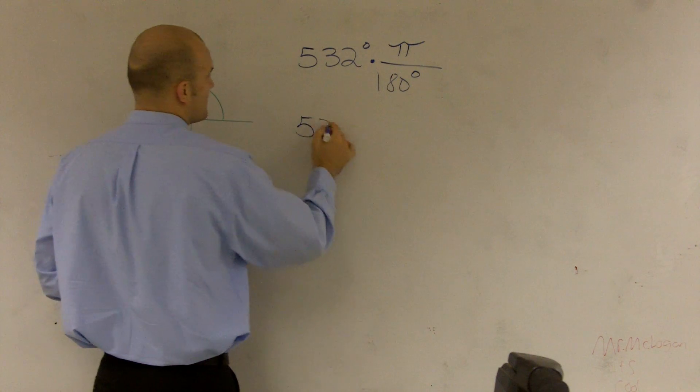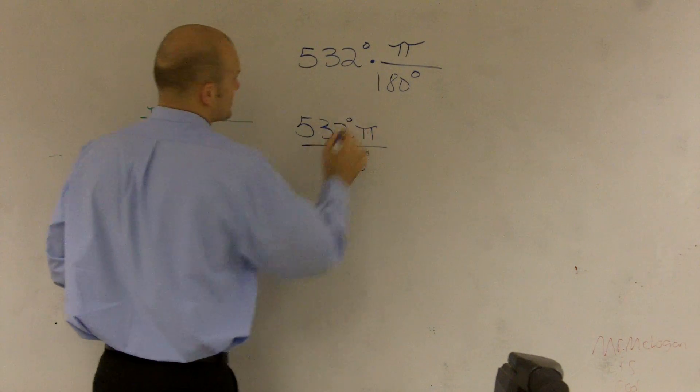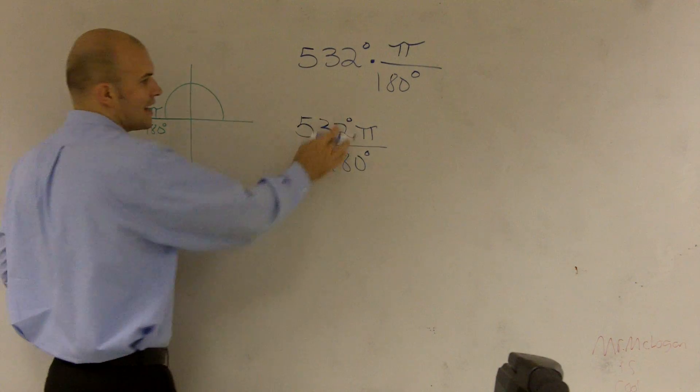Therefore, then when I do this, I have 532 pi over 180 degrees. And what happens is your degrees now are going to cancel out.